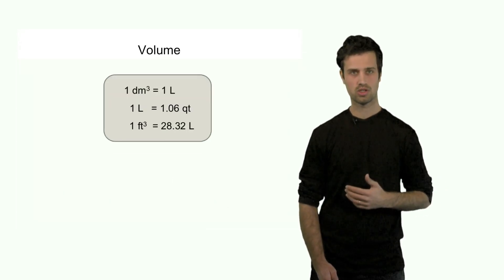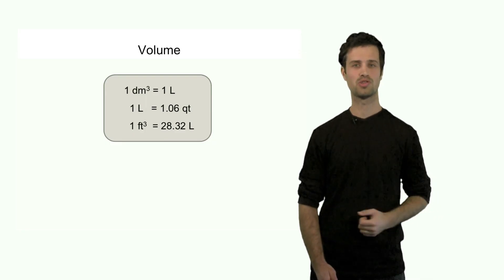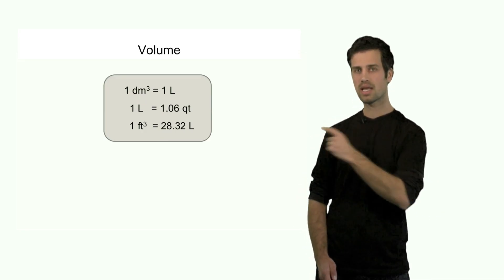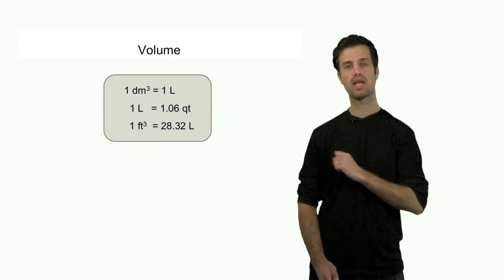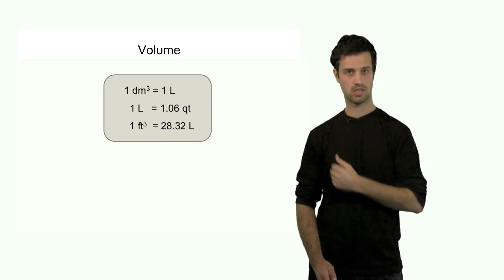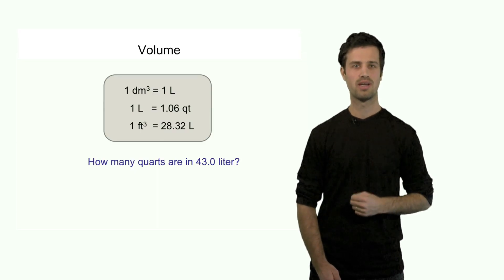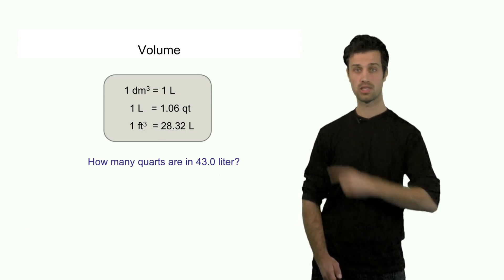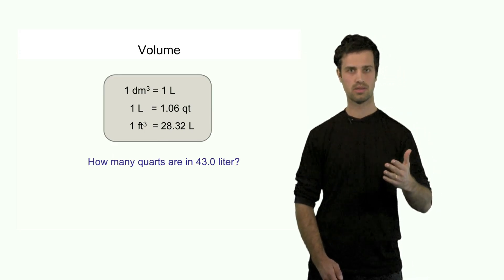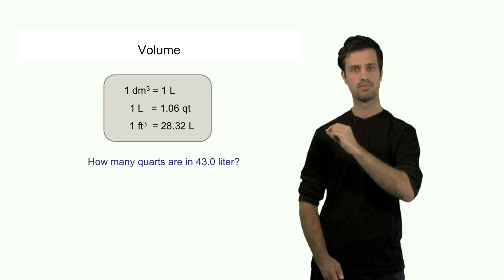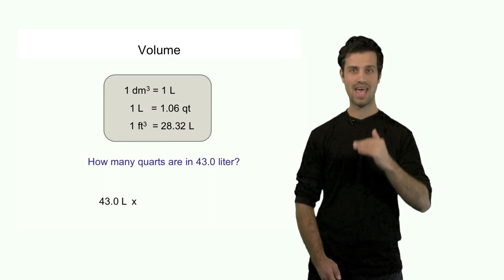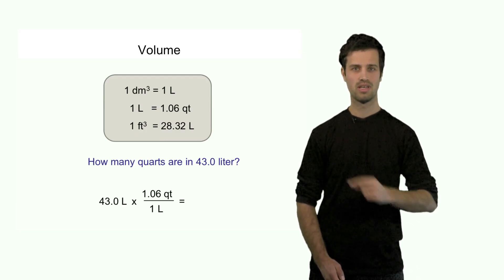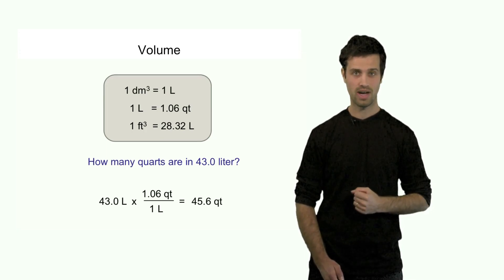Let's now look at a couple of useful conversions in terms of volume. This box contains extremely useful conversions: the first line is the definition of a liter as 1 decimeter cubed; the second line relates liters to quarts; and the third line relates cubic feet to liters. For example, how many quarts go in 43.0 liters? I make a unit factor from the second line with quarts on top and liters at the bottom — liters strike out, and the answer is 45.6 quarts.